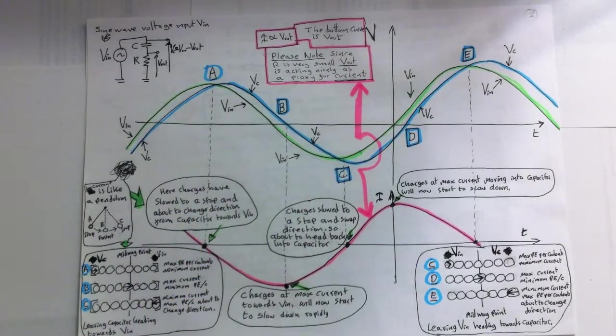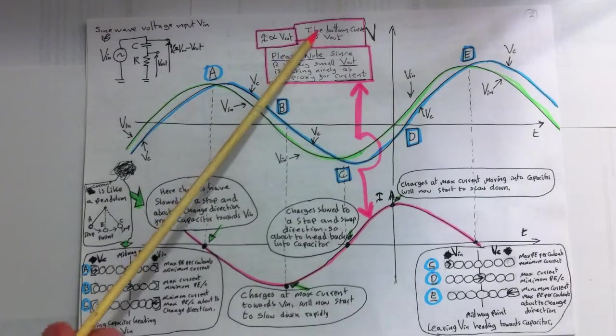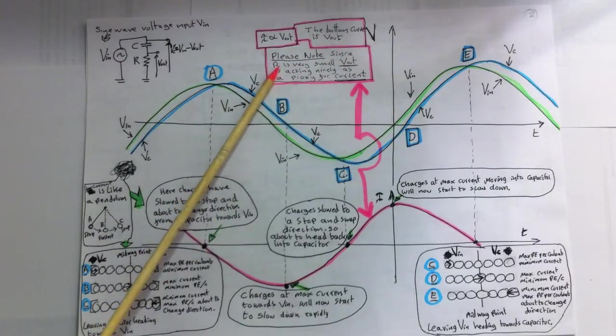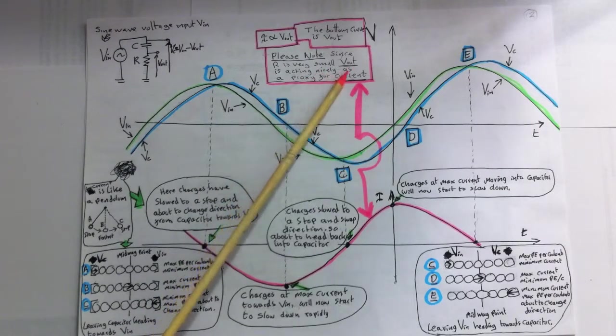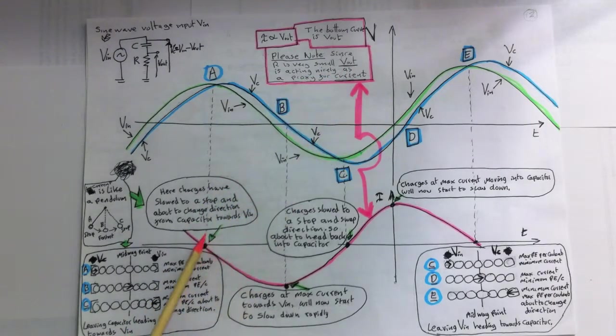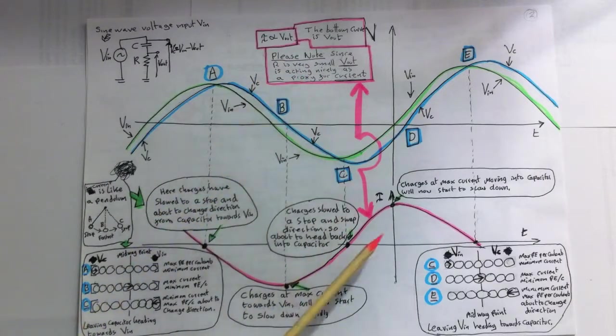Here I will show how these voltage differences affect the charge flow. So because I've said the Vout is here, as I say here, the bottom curve is Vout, please note, since R is very small, Vout is acting nicely as a proxy for current. So this is a plot of Vout, but you can also consider it to be a plot of the current, because they're the same, they're just in proportion. So here I'm going to show how the voltage differences affect the charge flow.